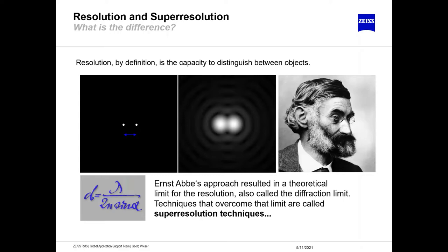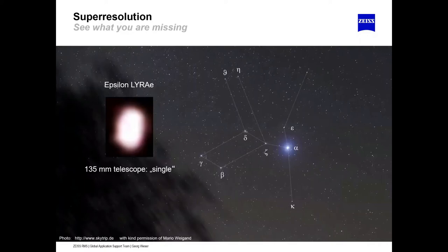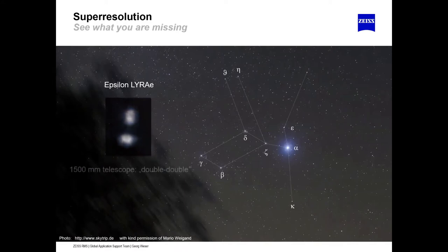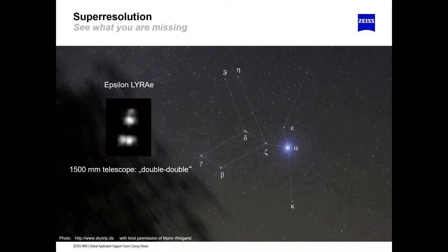To understand super resolution, we can turn to astronomy. There is a constellation called Lyra, and within it an Epsilon star. With a conventional telescope you see only a blob of light. If we improve the resolving power of the telescope, we see multiple stars in the cluster. Increasing the resolving power even further reveals this is actually a double-double star system. This is exactly what we do in super resolution microscopy — improving resolving power to see what is actually there, rather than a diffuse blob of light.